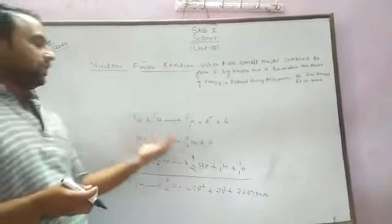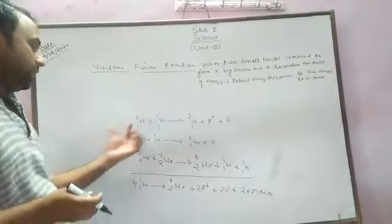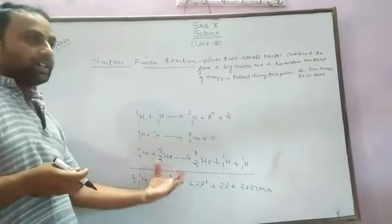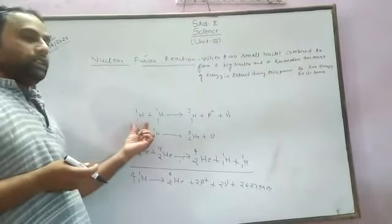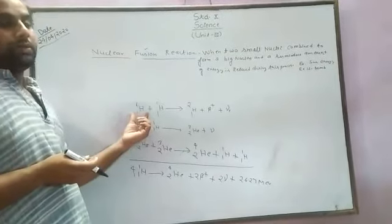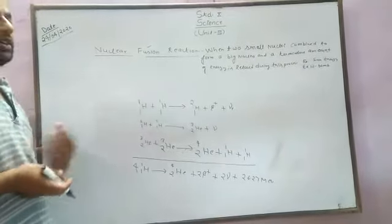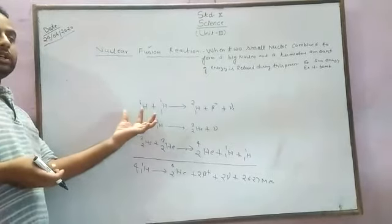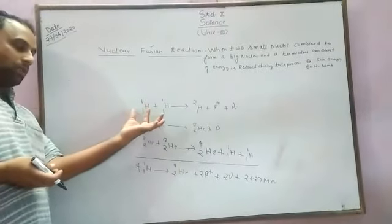Now we can understand when the creation of energy is taking place and how many reactions are taking place inside the sun. We start with H1, the hydrogen isotopes. Hydrogen has three isotopes: hydrogen (protium), deuterium, and tritium.